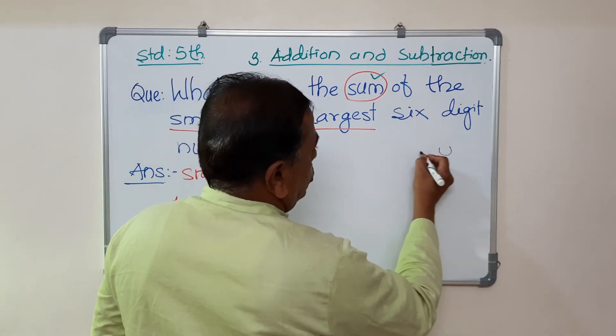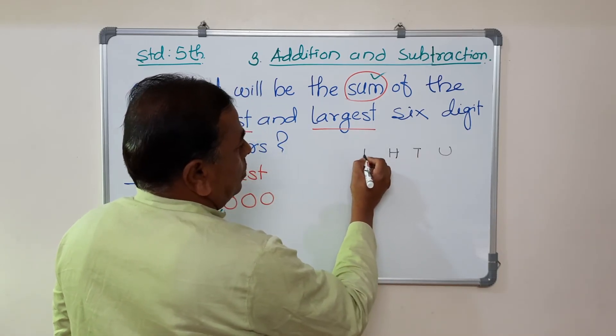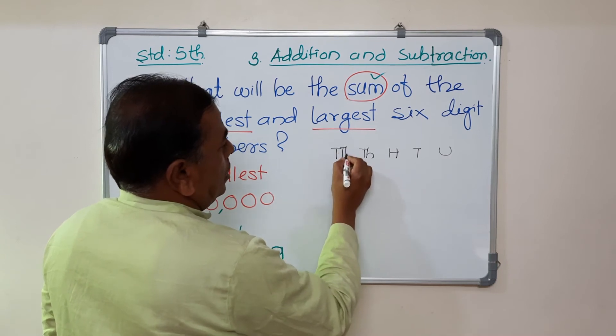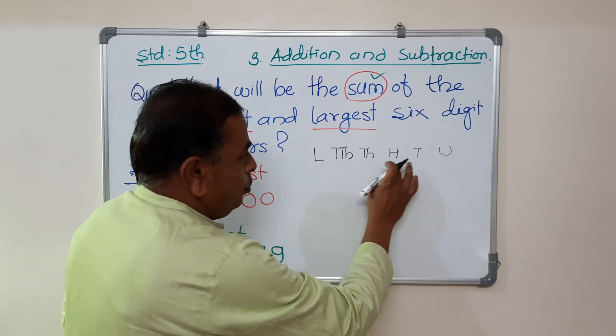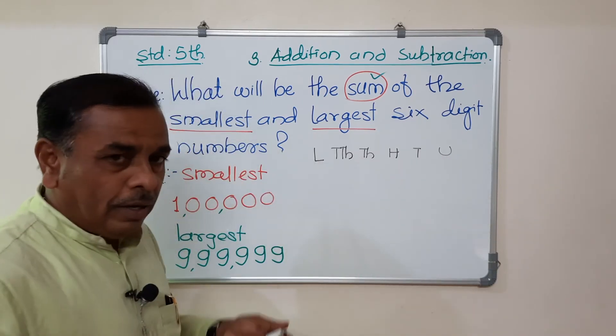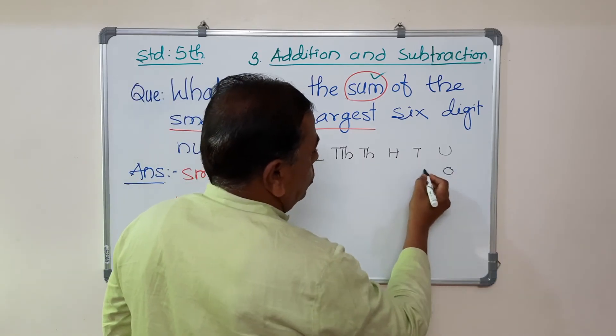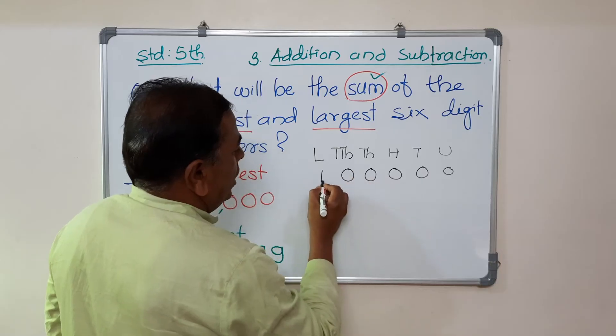Unit, 10, 100, 1000, 10,000, lakh. 1, 2, 3, 4, 5, 6. Okay. First number 1 lakh. 0, 0, 0, 0, 0. 1 lakh.